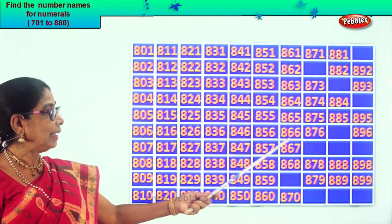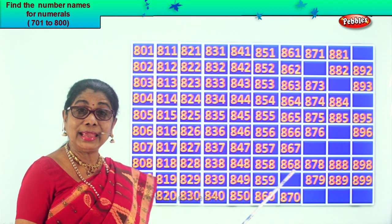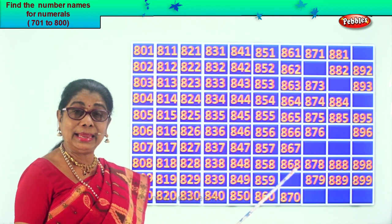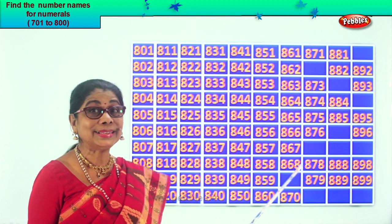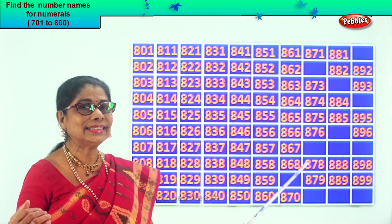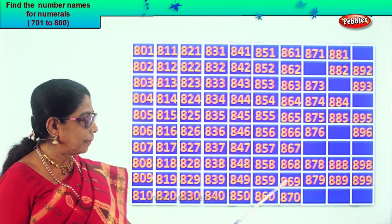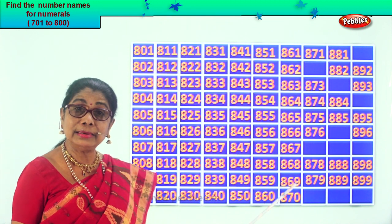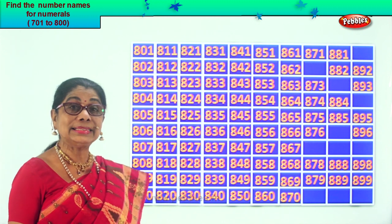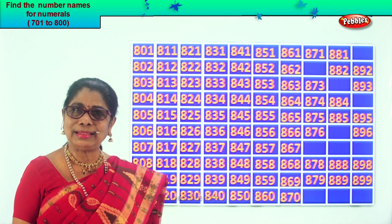Then 867, 868. After 8 comes 9 — after 68 comes 69. So the missing number is 869, then 870. Let's repeat together.